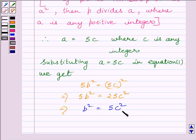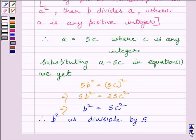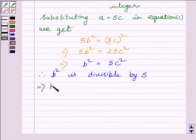Now, clearly we can see 5 and C square both are factors of B square. So, we can write B square is divisible by 5. This implies B is divisible by 5.